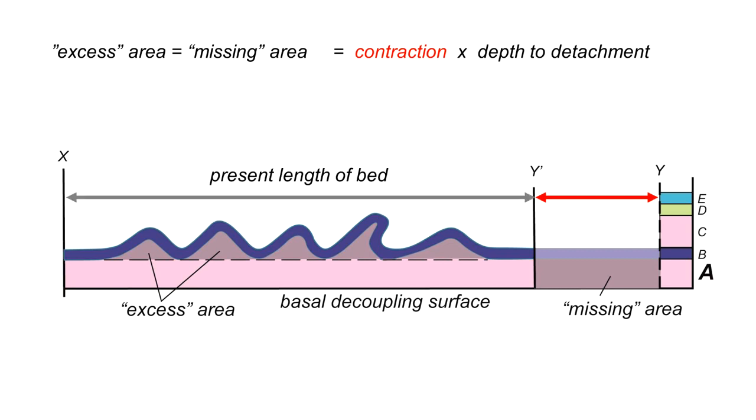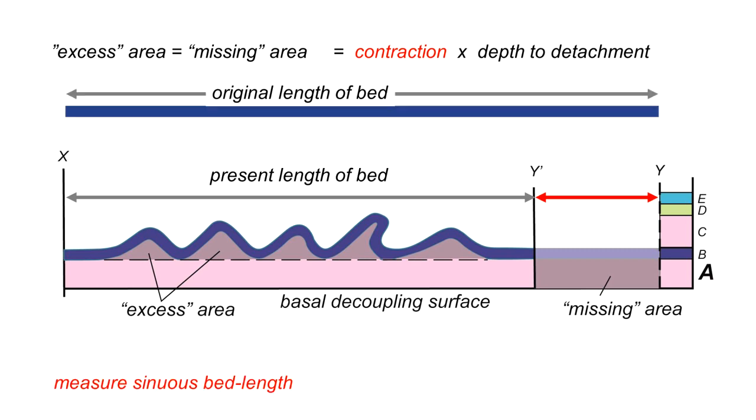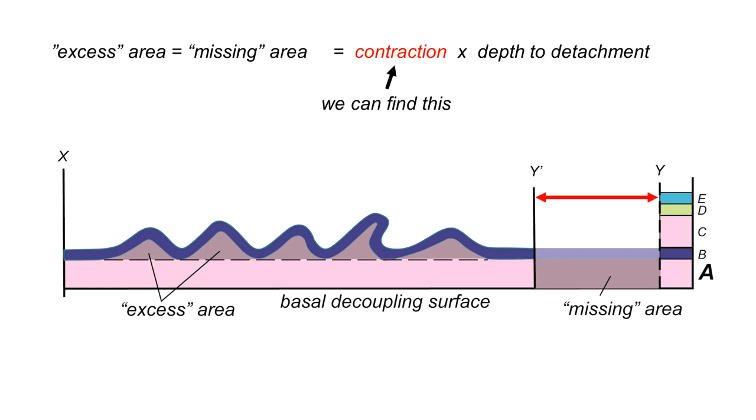So that's our contraction. How do we estimate this? We can measure the present day length of the cross section, the horizontal distance between X and Y prime across our model. The original length of our layer B can be established by measuring its sinuous bed length around all those folds and laying that length out flat. The difference between the original length and the present length is the contraction, which we can find by a simple measurement from the cross section. Because we can measure from the cross section the excess area, we can calculate the depth of detachment. If we take the excess areas and divide them by that measurement of the contraction, we can calculate the depth of detachment for those folds.